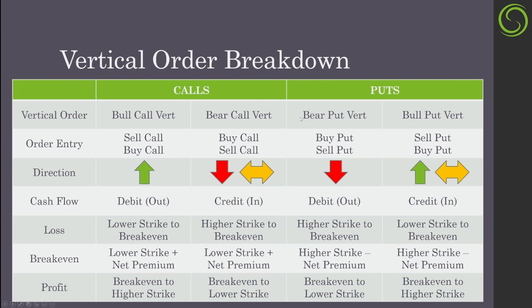For puts, we want to do a bear put vertical. How we set that up is we buy the higher put and sell a lower put. We're looking for the stock to go down, and this would be a debit — we'd be paying cash out. From the higher strike to break even we have losses. The break even for the put side is the higher strike minus the net premium. Below the break even to the lower strike is profit, and anything below the lower strike is max profit.